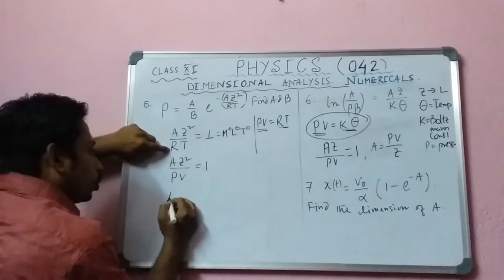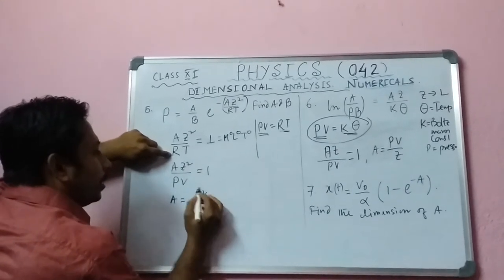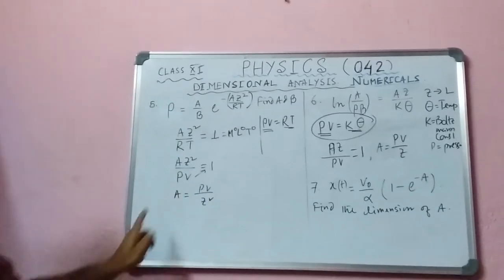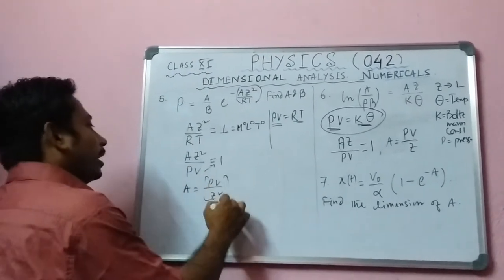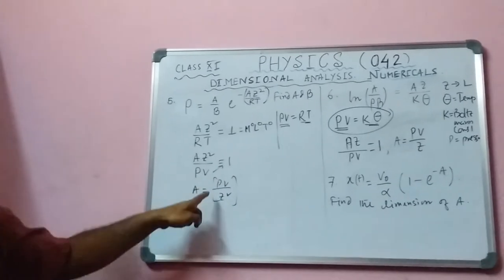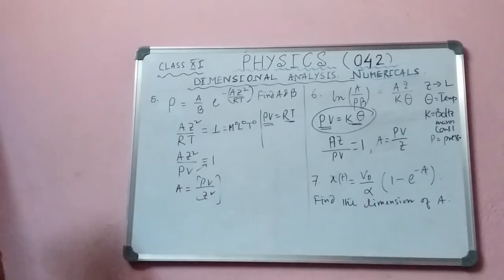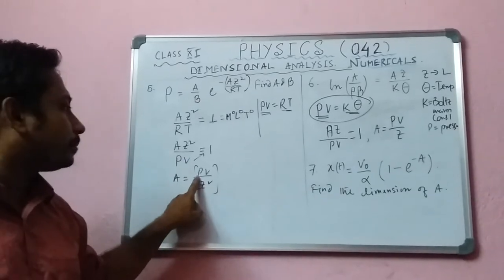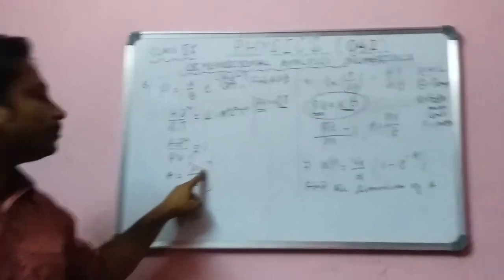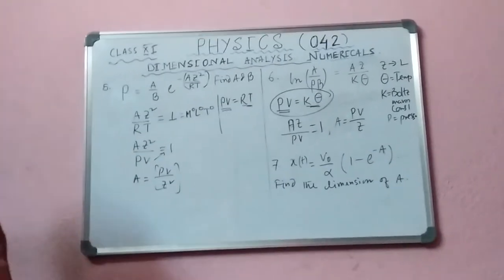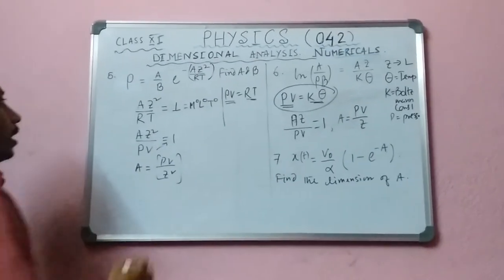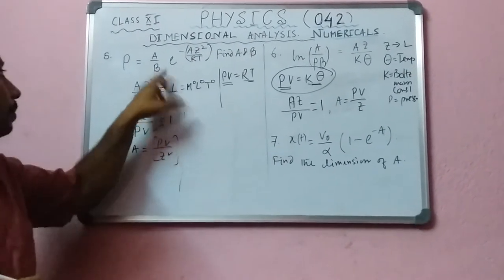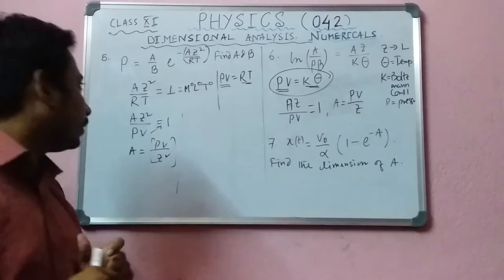So a·z² divided by p·V equals one, meaning a equals p·V divided by z². To find the dimension of a, put in: pressure is F/A, volume is L³, and z is L squared.